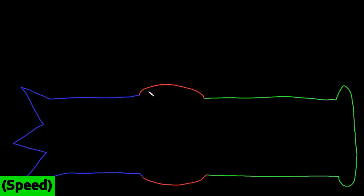Most neurons at rest, meaning when they're not receiving any input, have a stable separation of charges across the cell membrane, called the resting potential. That consists of more positive charges in a layer on the outside of the membrane and more negative charges in a layer along the inside of the membrane. These charges are ions — the negatively charged ions along the inside are called anions.